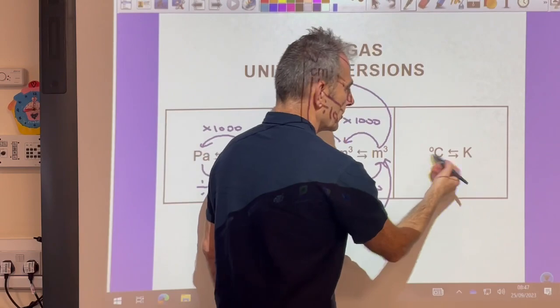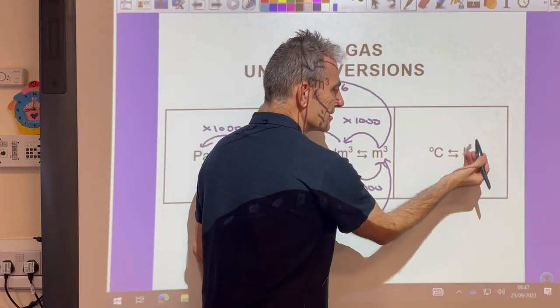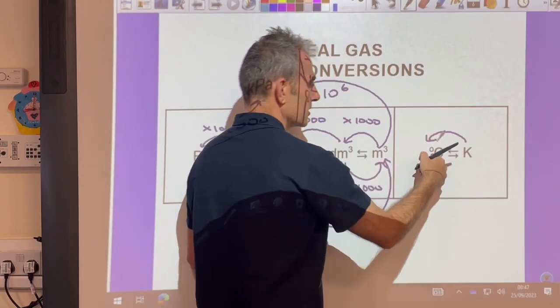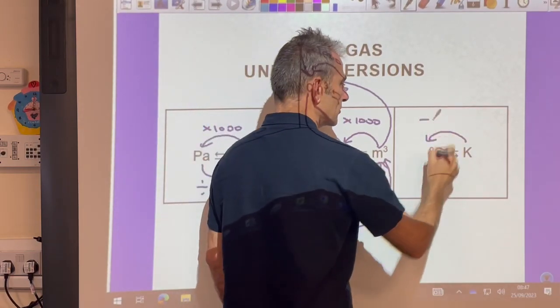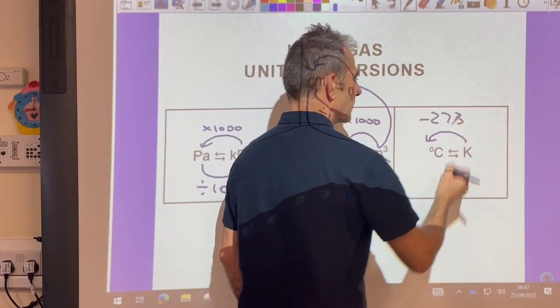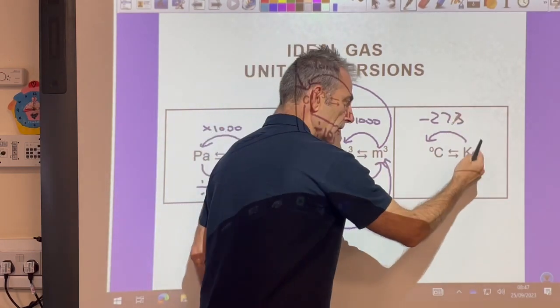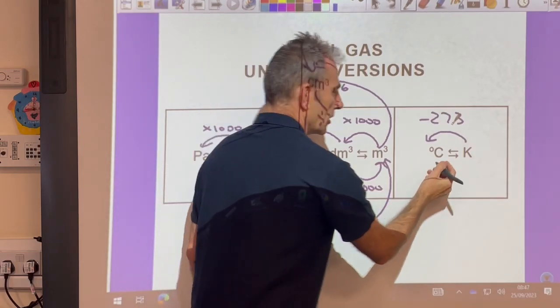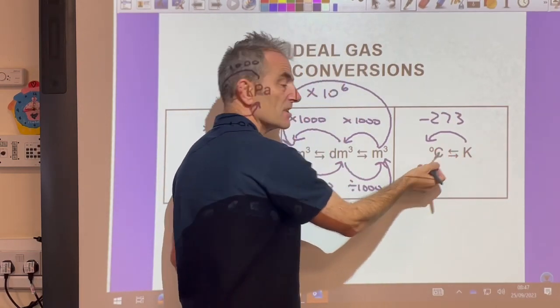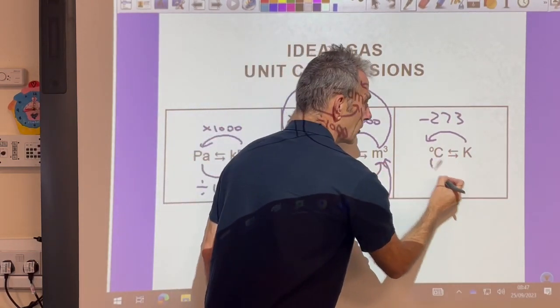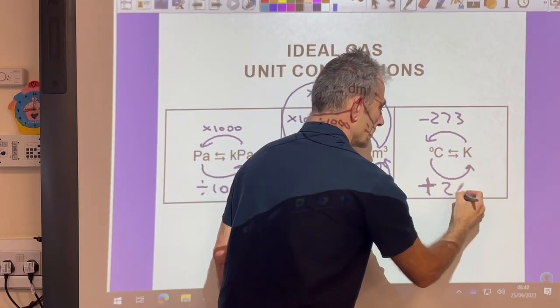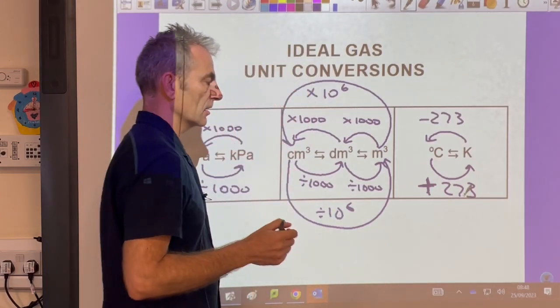Last one: temperature. If you're on zero Kelvin, absolute zero, but you need to put it into degrees C, you subtract 273. So zero Kelvin is minus 273 degrees C. Going the other way, if you're on zero degrees C and you want to put it into Kelvin, you add 273.